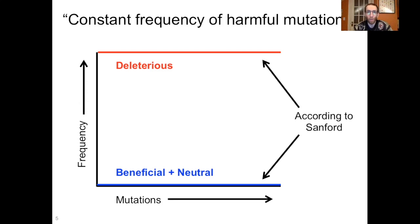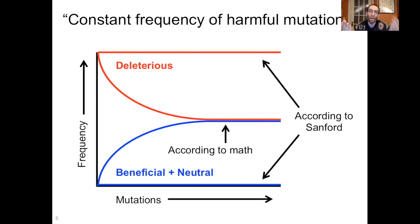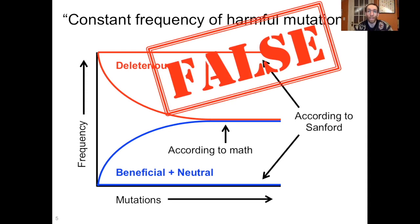The second requirement is a constant frequency of harmful mutations. Sanford is very clear: even as mutations occur, the frequency of future mutations in terms of their effects stays almost entirely deleterious — meaning harmful. Sanford says deleterious mutations remain at about 100%, and beneficial and truly neutral mutations are close to 0%. This is mathematically impossible, because for every deleterious mutation that occurs, the reverse mutation becomes possible, and that is necessarily — according to Sanford's own logic — a beneficial mutation. So eventually, as deleterious mutations accumulate, you reach an equilibrium where the frequency of possible deleterious mutations equals the frequency of possible beneficial and neutral mutations. Can deleterious mutations occur at a constant frequency over time? No, they cannot. That is also false.